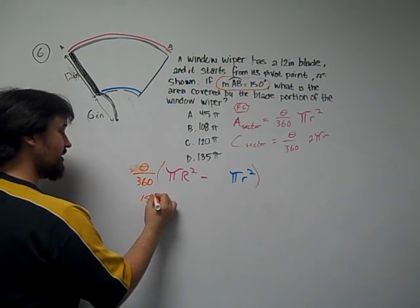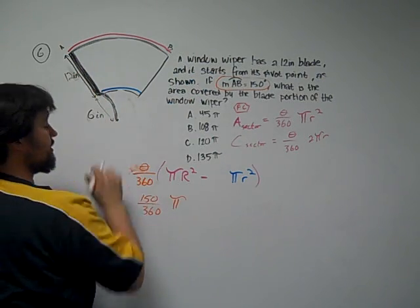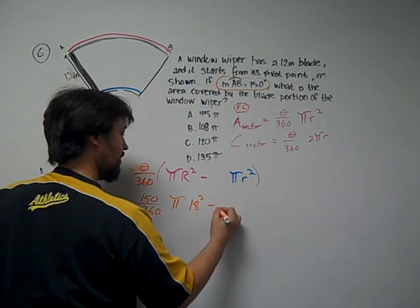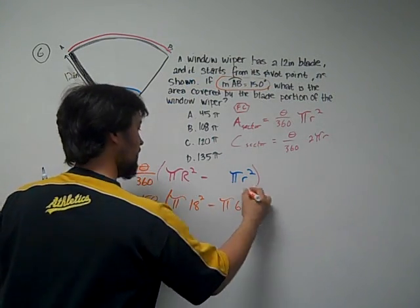And so applying now, 150 over 360 pi times big r, which is 18 squared, minus pi little r, which is 6 squared.